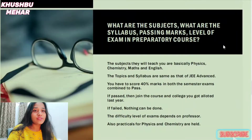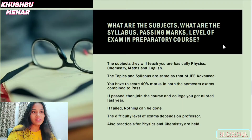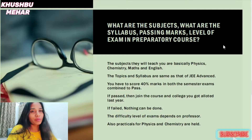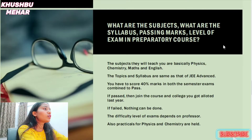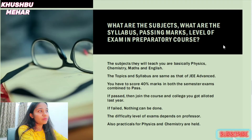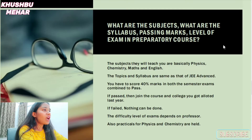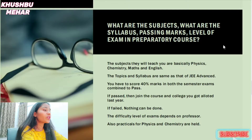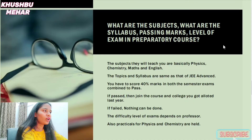What are the subjects, passing marks, and level of exam in the preparatory course? The subjects taught are physics, chemistry, math, and English. The syllabus is the same as JEE Advanced. You have to score 40% marks combined in both semesters to pass. If you pass, you join the course and college you were allotted.